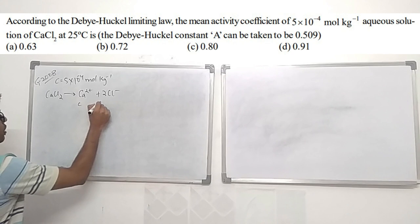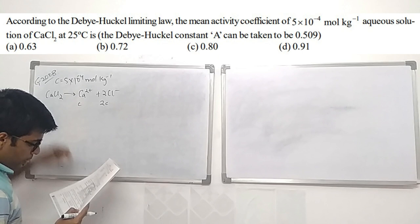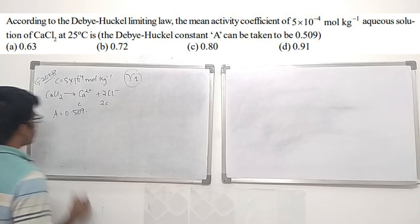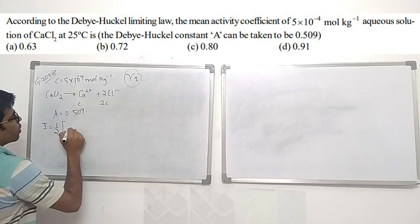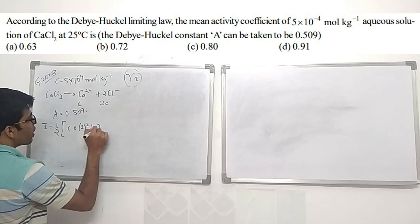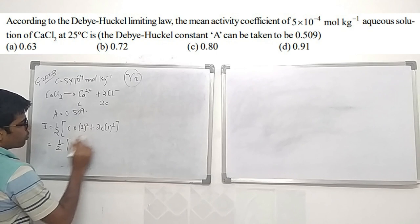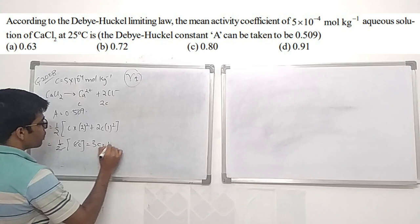CaCl₂ dissociates as Ca²⁺ + 2Cl⁻. So [Ca²⁺] = C and [Cl⁻] = 2C. Given A = 0.509. First calculate ionic strength: I = ½(C·2² + 2C·1²) = ½(4C + 2C) = 3C = 3 × 5×10⁻⁴ = 15×10⁻⁴.